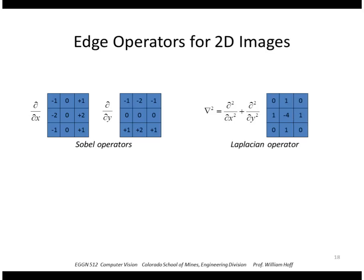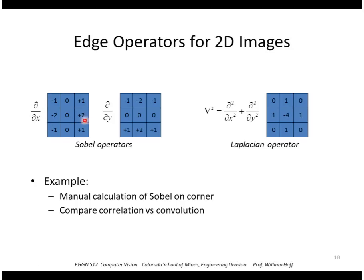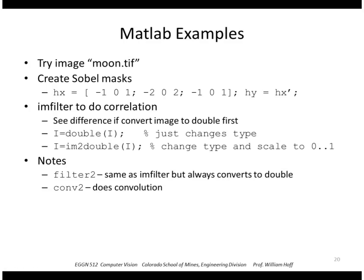So to look at the, well, I guess I won't do this, I've already done the manual calculation of the digital filter, but you could see how you could compute by hand the correlation of this with a corner image. And if you had to do a convolution, remember to reflect this, so the positives would be here and the negatives would be here. Okay, to do this in MATLAB, let me show this example of this image, the moon image.